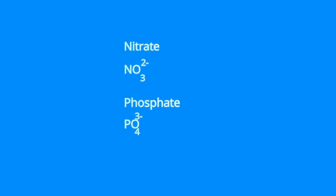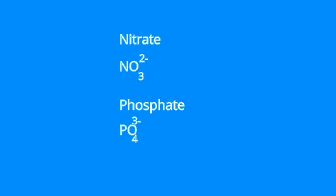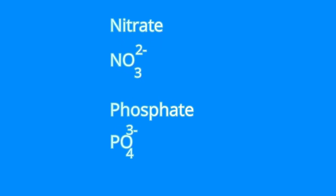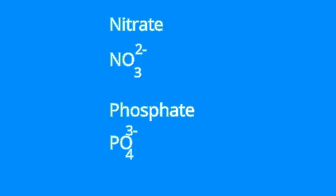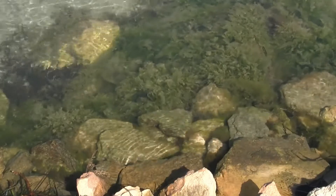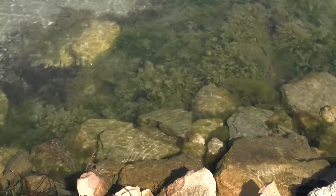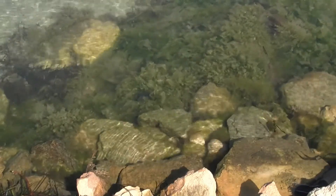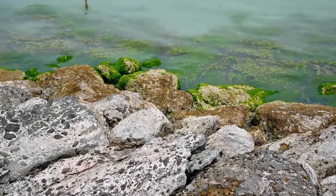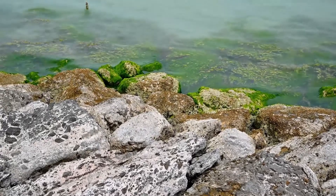The increase in the amount of nutrients, such as nitrate and phosphate, in the aquatic environment can cause eutrophication. During this process, there will be an excessive emergence of organisms such as algae and cyanobacteria.